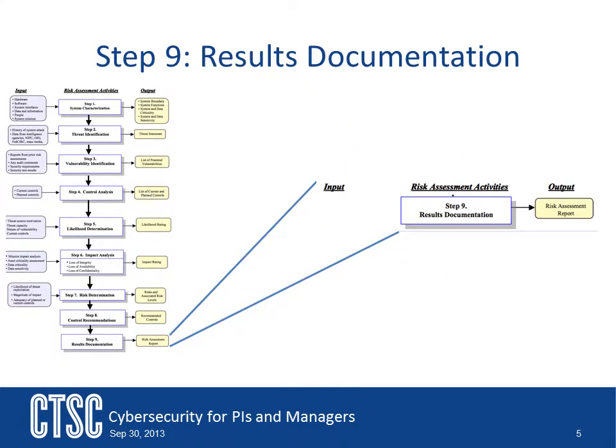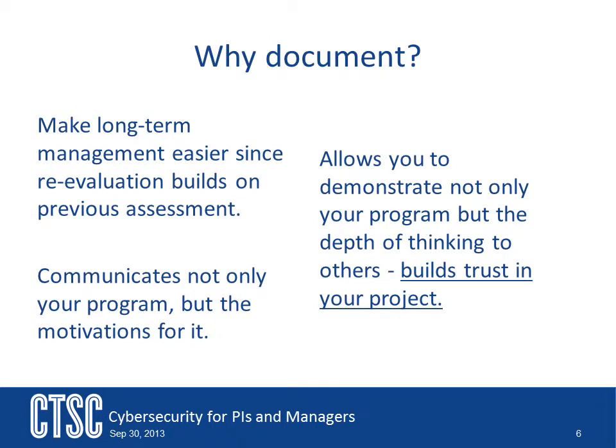The next step after performing the control decision-making is to actually produce a document — the final risk assessment document. The question might be asked: why do we need to produce a document, especially if we have all these other documents? As we talked about in previous sections, sometimes the risk assessment is needed to backfeed into previous steps of the current risk assessment. It helps to communicate to project leadership what is going on, where the security problems are in the system, and how particular controls, policies, and procedures are needed to fix those risks. Documentation is always needed and always important, which is why you produce this risk assessment document.